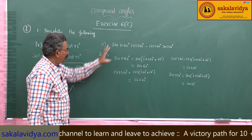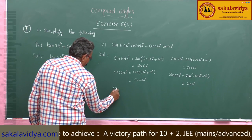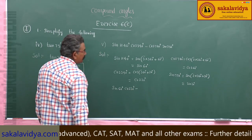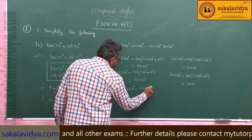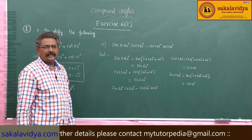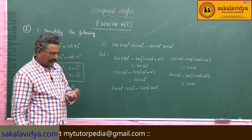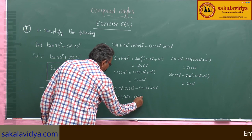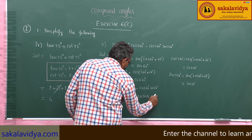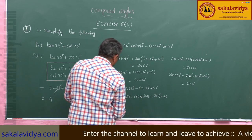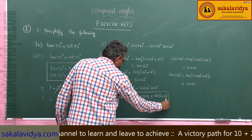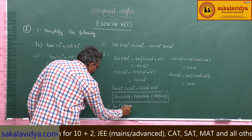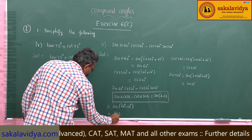Now this problem becomes sin 60 · cos 30 minus cos 60 · sin 30. This appears to be in the form of sin A cos B minus cos A sin B, which equals sin(A − B). So this equals sin(60 − 30) = sin 30, which is equal to 1 by 2.